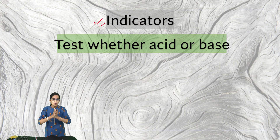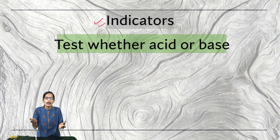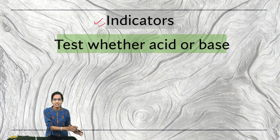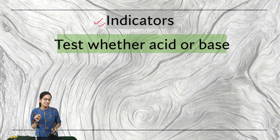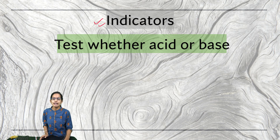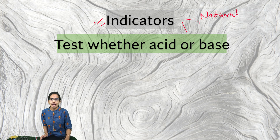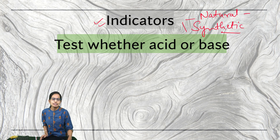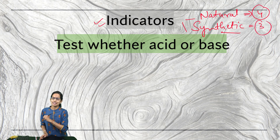There can be numerous indicators, and it's not required that you be in a chemistry lab to understand whether a solution is acidic or basic — you can try it at your very home. We will understand indicators in two ways: they can either be natural or synthetic in nature. Today we will look at four natural indicators and three synthetic indicators.